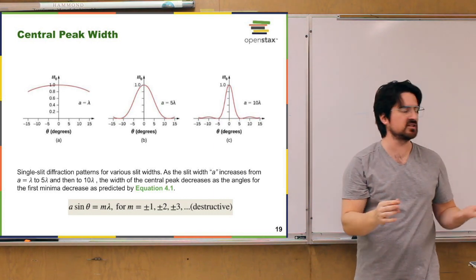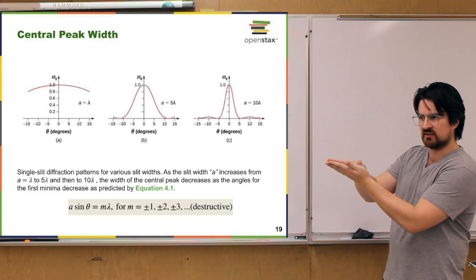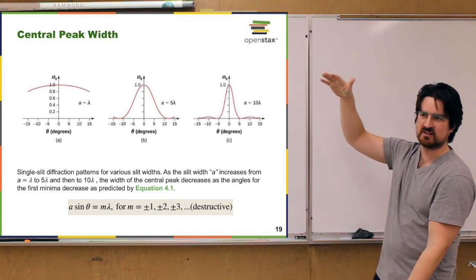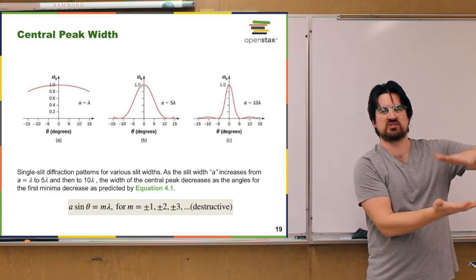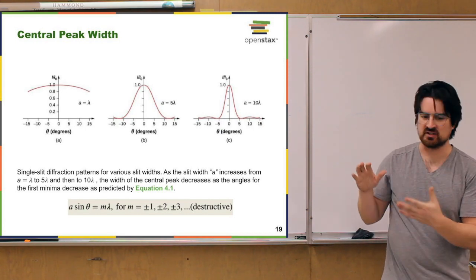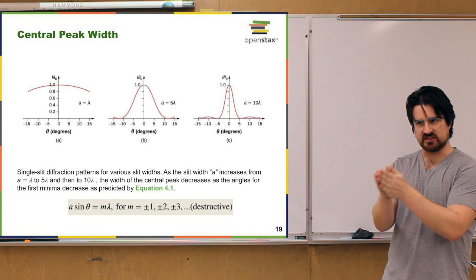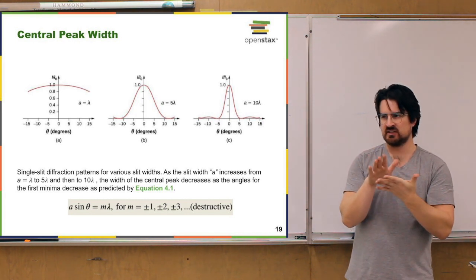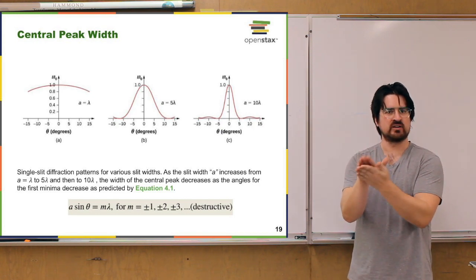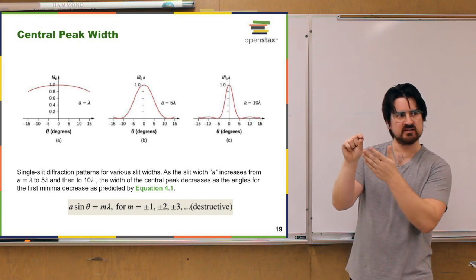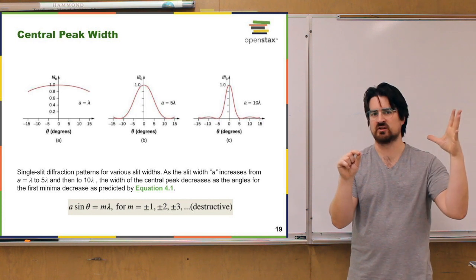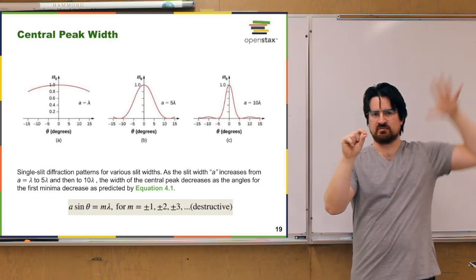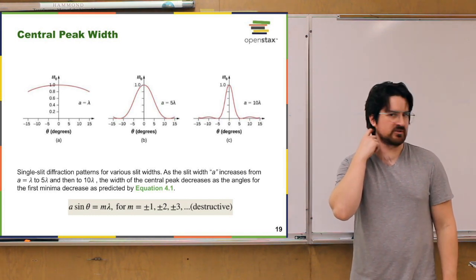Conversely, if you narrow down the slit width, the width of the central peak is going to expand — it's going to blow up. This kind of makes sense: if you expand the slit width, eventually you pass a limit where the slit width is so much larger than the wavelength that there's barely any diffraction happening, and all you see on the screen is basically just the central peak. The fact that the width of the central peak gets larger as you confine the slit hints at Heisenberg's uncertainty principle — when you confine where the light goes through a tiny spot, you lose information about where it's all going. We'll talk more about that in the chapters on quantum mechanics.